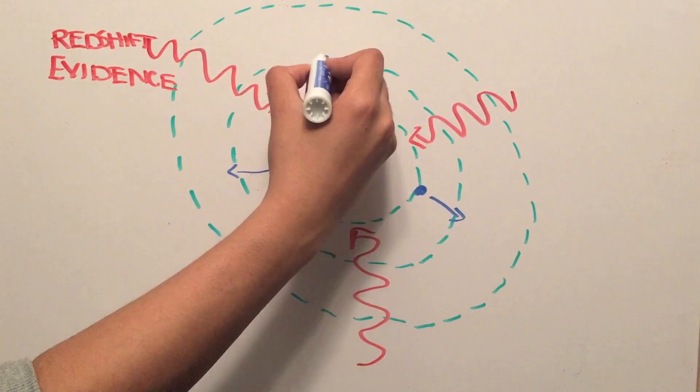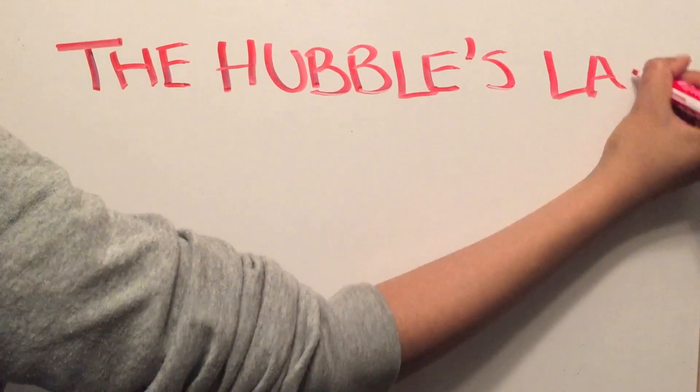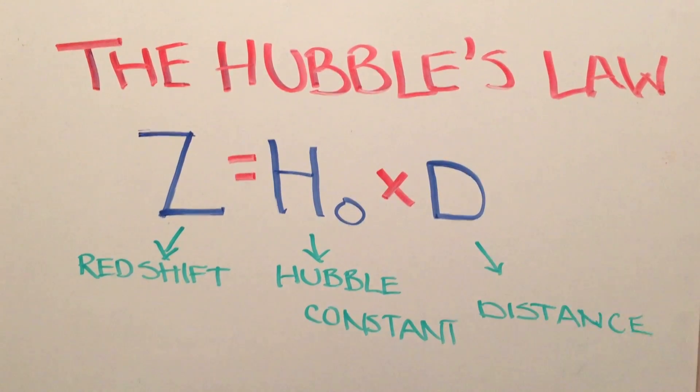Redshifts are not caused by the objects that are moving within the universe, but instead the expansion of spacetime between us and these objects. This is known as Hubble's law. The redshift, or recessional velocity, is equal to the Hubble constant multiplied by distance.